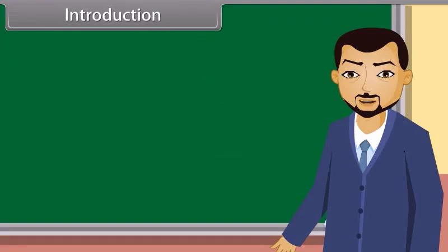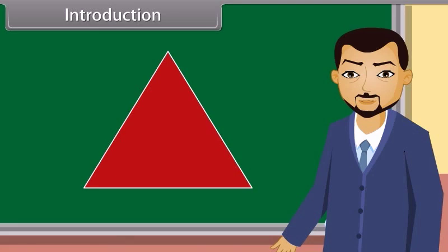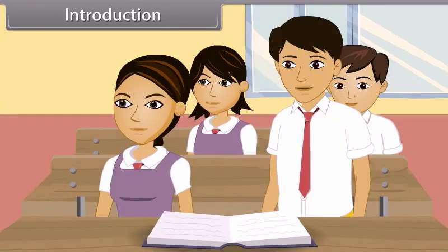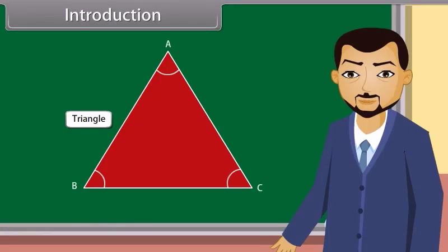Students, you must have studied about closed figures. Now, what do we call the figure which is formed by three intersecting lines? A triangle! Yes, you are right, Rahul. A triangle. It has three sides, three angles and three vertices. Today, I will tell you about the congruence of triangles and the properties of triangles.